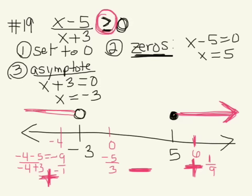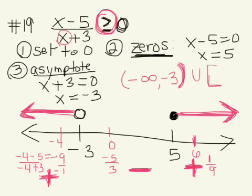So our interval notation for this is negative infinity to negative 3. We have parentheses because we can't actually use negative 3 - that makes our denominator 0. Union with we have a bracket on our 5 to positive infinity.